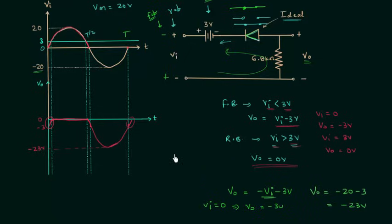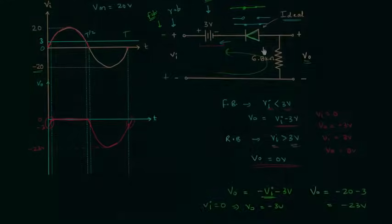If you compare biased series clippers and unbiased series clippers, you will find biased series clippers are a little bit tougher to analyze because we have an additional DC voltage source present in the circuit, and this DC voltage source will alter the state of the diode — it may reverse bias or forward bias the diode. So you have to analyze it carefully, following the steps explained in this lecture. If you have any doubt, you may ask in the comment section.